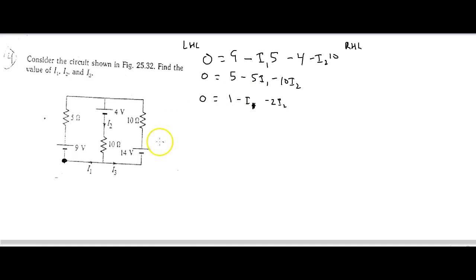I'm going to right-hand loop. Right-hand loop, I'm going to start it here where this arrow is. I'm going to whip around this way. So I'm going around that way. I've got 0. I'm going to go up 14. I'm going to lose an I3 times 10. I'm going to lose another 4. Again, I'm going backwards through that battery. And then I'm going to lose an I2 times 10. I'm going to recognize that I have 0 equals 10 minus 10 I3s minus 10 I2s.